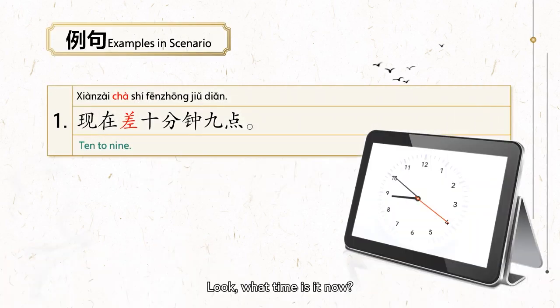Look, what time is it now? It's 8:50. That is 10 minutes before 9 o'clock. So we can also put it like 差不多九点了.